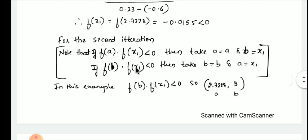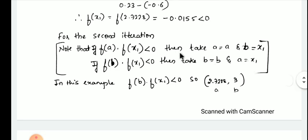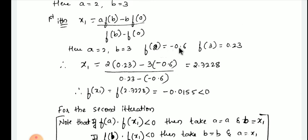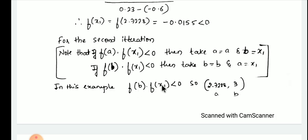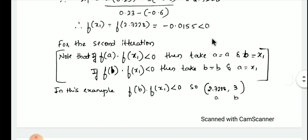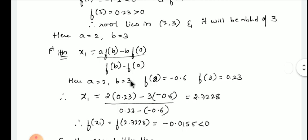For the second iteration, note: if f(a)·f(x1) is less than 0, then take a = a and b = x1. If f(b)·f(x1) is less than 0, then take b = b and a = x1. Here, f(a) = −0.6 and f(x1) = −0.0155 — both are negative, so their product is positive, which is not less than 0. Therefore we check f(b)·f(x1), which is less than 0, so we take b = b (which is 3) and a = x1 = 2.7228.